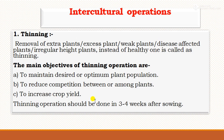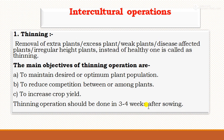For interculture operations, thinning is an important operation in jute. Thinning means the removal of extra, weak, disease-affected, or irregularly grown plants to maintain the desired optimum plant population, reduce competition among plants, and increase crop yield. The thinning operation should be done 3 to 4 weeks after sowing.